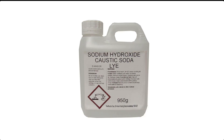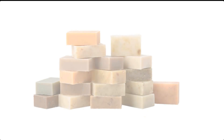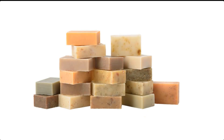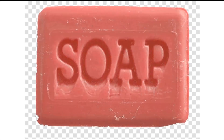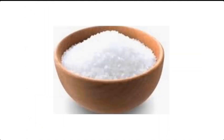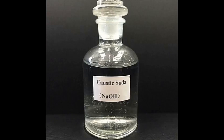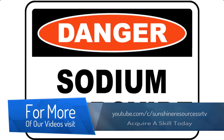Caustic soda is a very important chemical in soap making, such as bar soap and toilet soap. As a matter of fact, bar soap or toilet soap cannot be made without caustic soda or any other base. It reacts with fats or oils to form soap, a process called saponification.